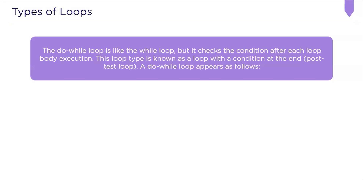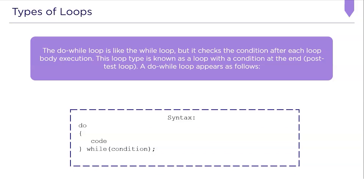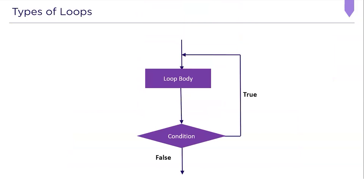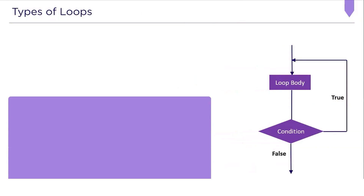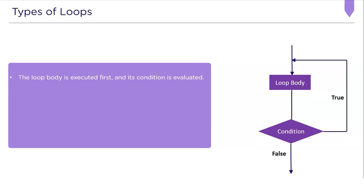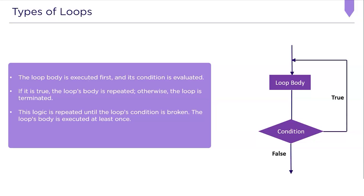Next, we will look at the do-while loop. The do-while loop is like a while loop, but it checks the condition after each loop body execution. This loop type is also known as a loop with the condition at the end, or post-test loop. In the do-while syntax, we have the keyword do first, then the code body to execute, and finally the condition following the while keyword. The loop body is executed first, and its condition is evaluated later. If it is true, the loop's body is repeated; otherwise, it is terminated. The loop's body is executed at least once. If the condition is always true, the loop will never end.